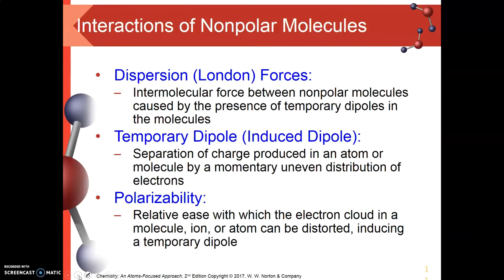A temporary dipole induces other dipoles in the molecules around it. Because when we have one side that is slightly positive and slightly negative — even if it's temporary — the lack of electrons on one side will attract more electrons from other molecules, and the abundance of electrons on one side will push other electrons away. That induces dipoles in other molecules. And through these temporary and induced dipoles, we get relatively small amounts of attraction between molecules that are near each other.